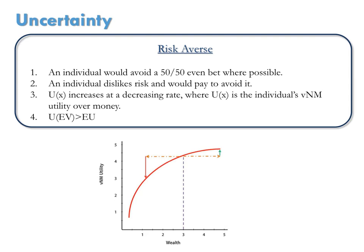These individuals dislike risk and would even pay to avoid it. For these individuals, the VNM utility function increases with money at a decreasing rate. As I'll show you, this means for risk-averse preferences, the utility of the expected value of a lottery is greater than the expected utility of the lottery itself.